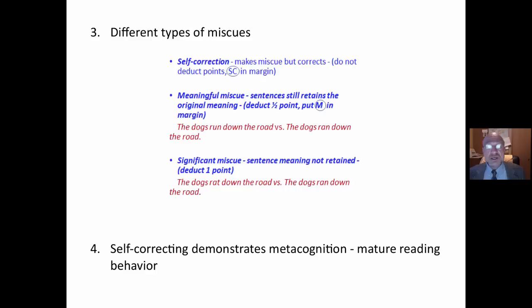I like to see self-corrections. A meaningful miscue is when it doesn't match but it still makes sense within the context of the sentence. The dog's run down the road versus the dog ran down the road. I deduct half a point there. Sometimes I don't deduct any, but half a point is what I recommend because students are still using what's in their head to create meaning with what's on the page. Again, that's a mature reading behavior.